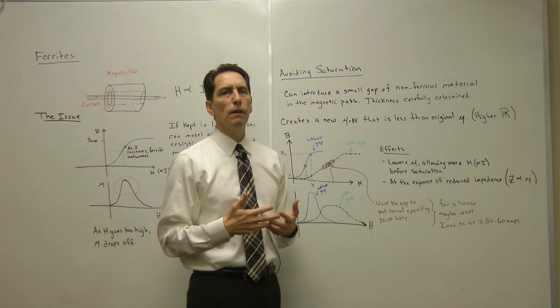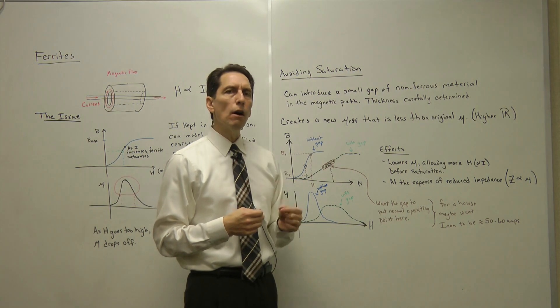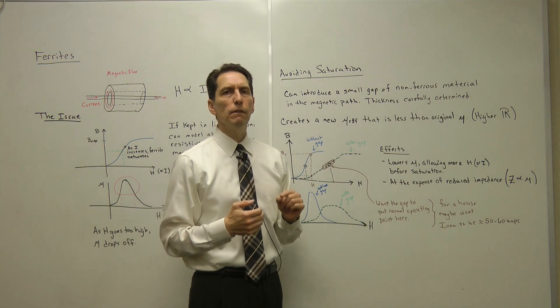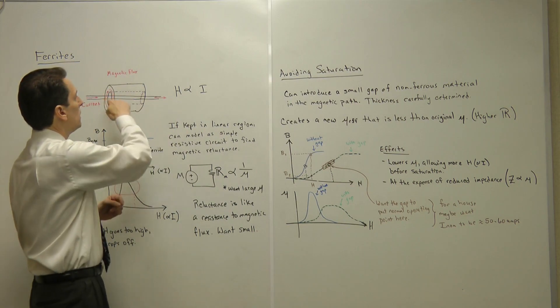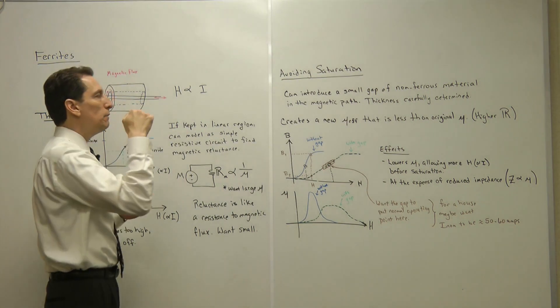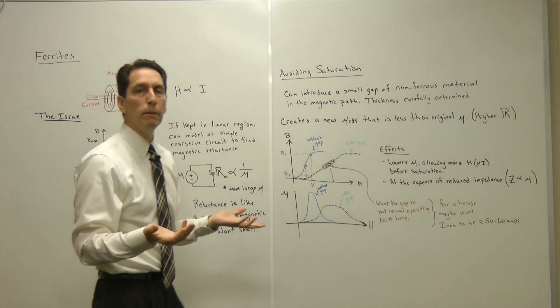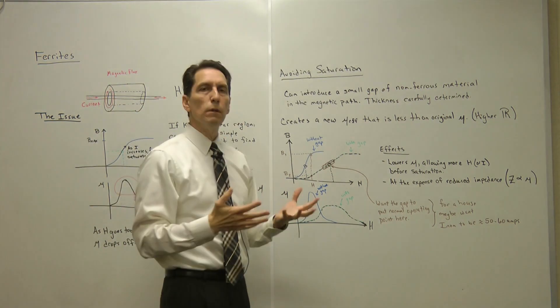Magnetic engineers have understood for a long time that if you introduce a non-ferrous gap into the ferrite, you can affect its performance. Basically, if you cut a small slot of the ferrous material out and introduce something that's not ferrous, such as air or aluminum.